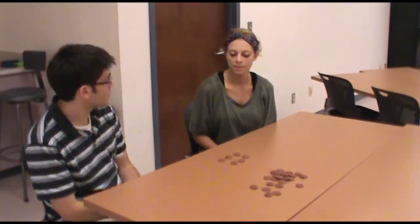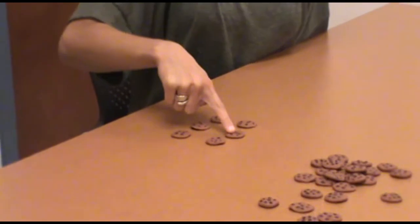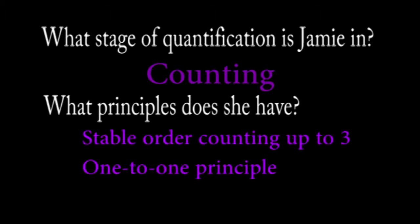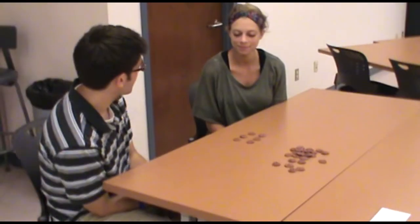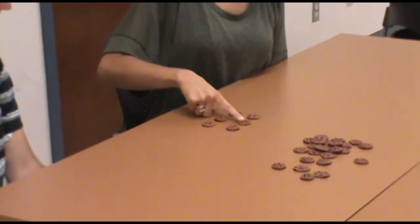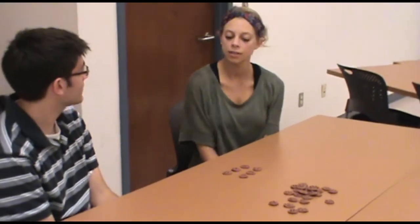Okay, Jamie. Count these cookies for me. One, two, three, six, seven, eight. And how many cookies do you have? Three. Okay, Jamie. Count these cookies for me. One, two, four, three, two, four, three, one. And how many cookies do you have? Three.